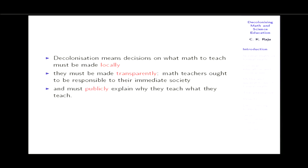There must be a public dialogue. Decolonization really means that what math to teach must be decided locally, not by reference to the West. It must be decided transparently and publicly. People should be able to publicly explain what they are teaching, why they are teaching it, and how it benefits the society around them. We can't trust the West because the formal math community leaders may be dishonest. Sir Michael Atiyah — their top mathematician, the only one to get both the Fields Medal and the Abel Prize — twice tried to grab credit for my theory in my published work.